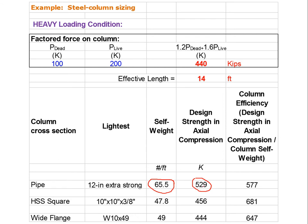The efficiency is the design axial strength divided by the weight per linear foot times the length of the column. Previously for the lightly loaded pipe, we had an efficiency of about 111, which we said was not very efficient. Now our pipe column is supporting 577 times its own self-weight.